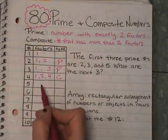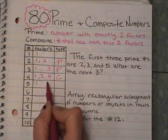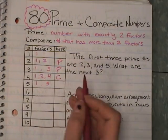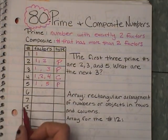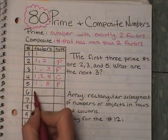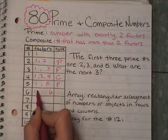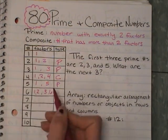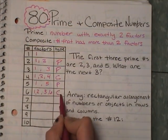5: 1 times what gives me 5? 5. So that is going to be prime — I only have two factors. Now I have 6: 1 times 6. Does 2 fit in? Yes. 2 times what? 3. So I have 4 factors — that makes it composite.